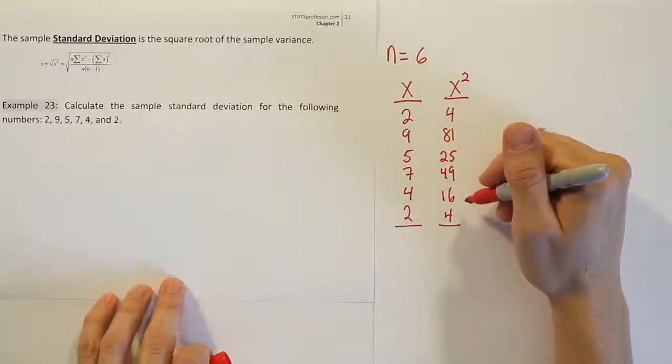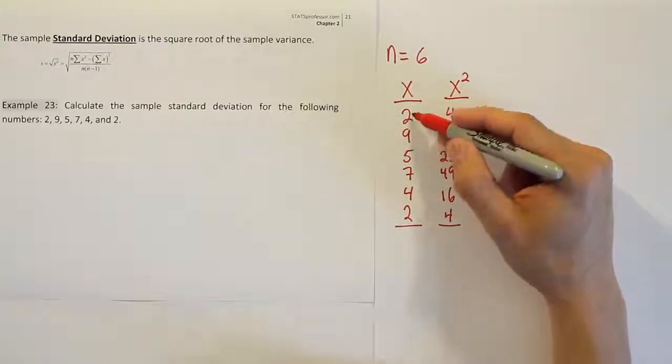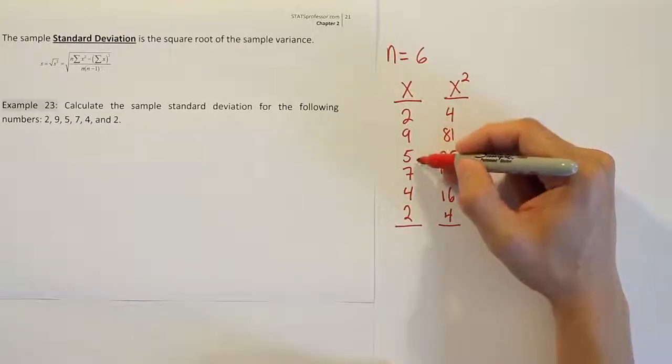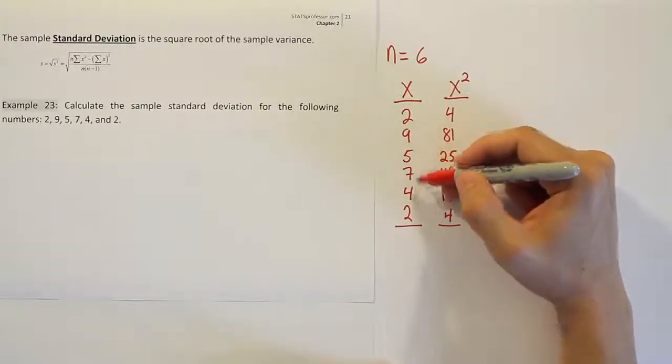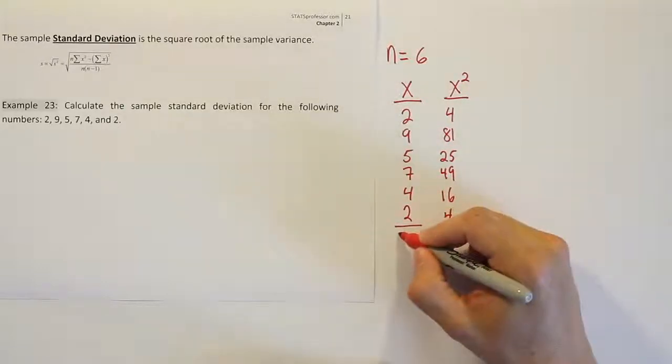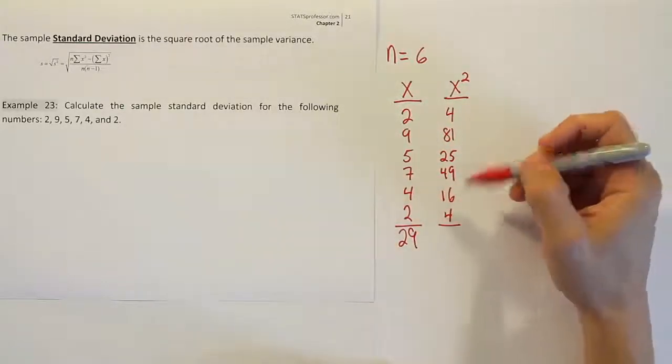All right, now that you have the two columns created, your next step is to sum the columns. So 2 and 9 makes 11, 5 and 7 make 12, 11 and 12 make 23, 23 and 6 make 29.